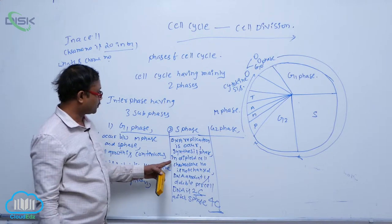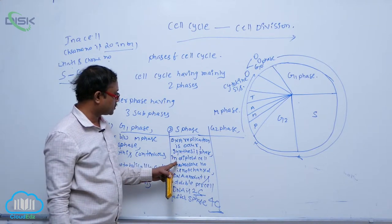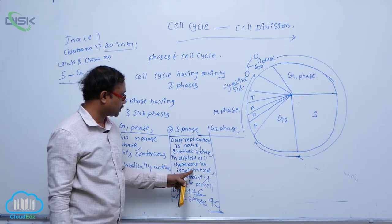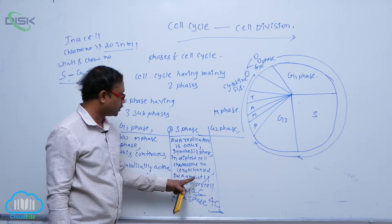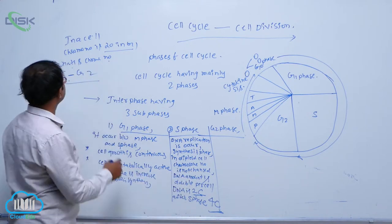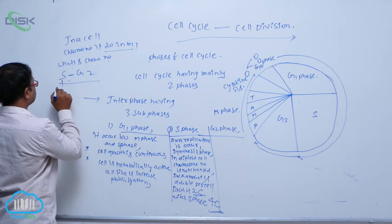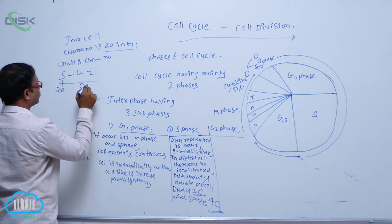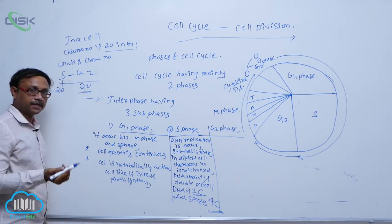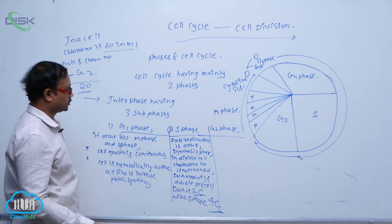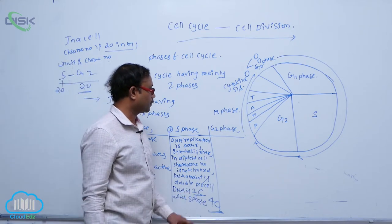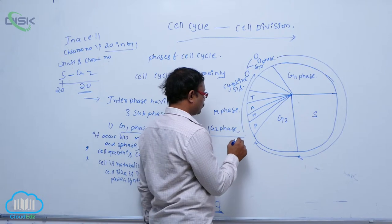For example, I also explained that in the S phase, chromosome number is not changed. Only DNA amount is double per cell. In S phase, 20 chromosomes, and G2 also 20 chromosomes. But DNA amount is changed. 2C is converted into 4C.